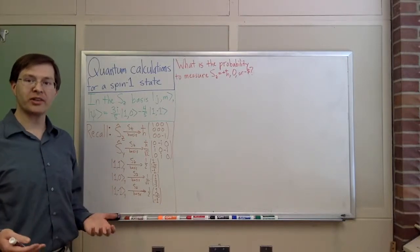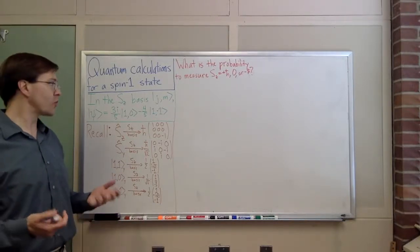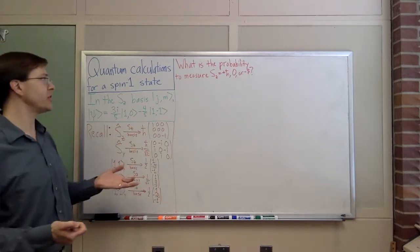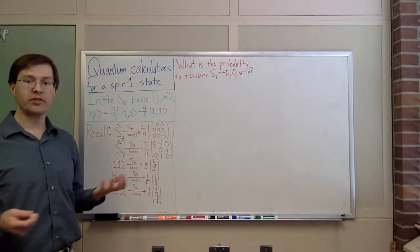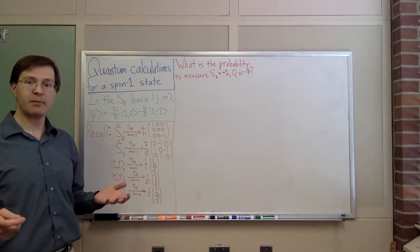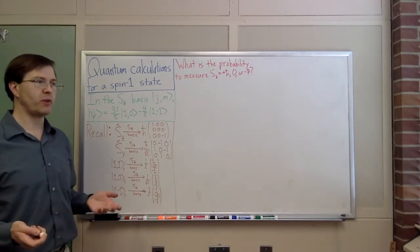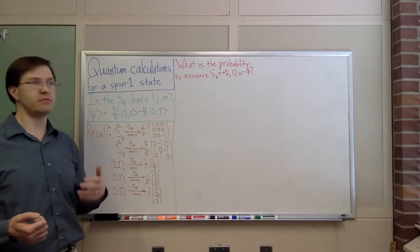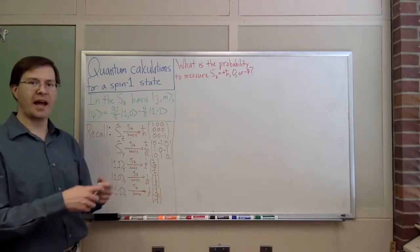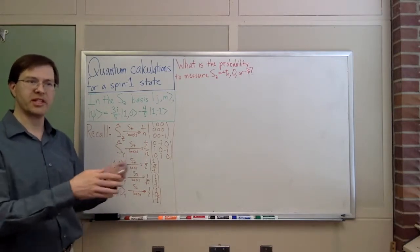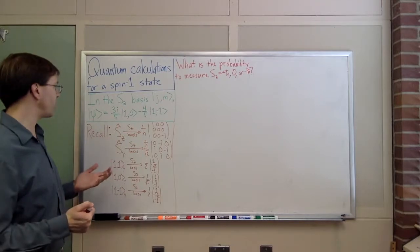I want to do some sample calculations in quantum mechanics using Dirac bracket, or bra-ket notation. In particular, I'm going to do those sample calculations for the example of a spin-1 particle. A spin-1 particle might be a Z boson or some composite atomic state or nuclear state or something.